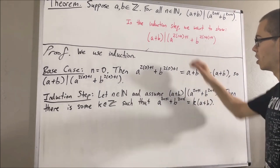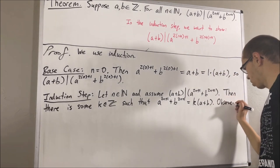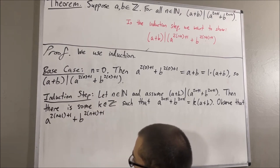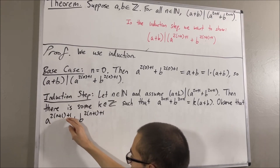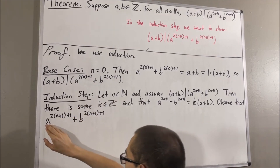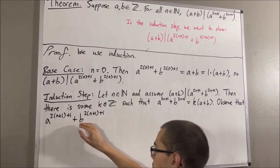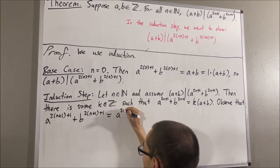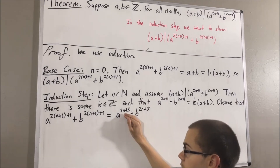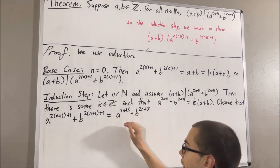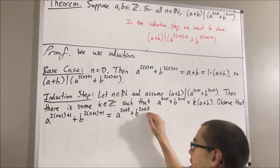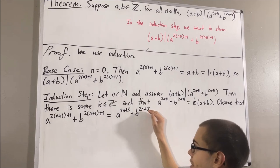Now let's write this out. We have 2 times n plus 1 plus 1 equal to 2n plus 3, so the expression for n plus 1 is A to the 2n plus 3 plus B to the 2n plus 3. We know that A to the 2n plus 3 equals A to the 2n plus 1 times A squared. Similarly, B to the 2n plus 3 equals B to the 2n plus 1 times B squared.